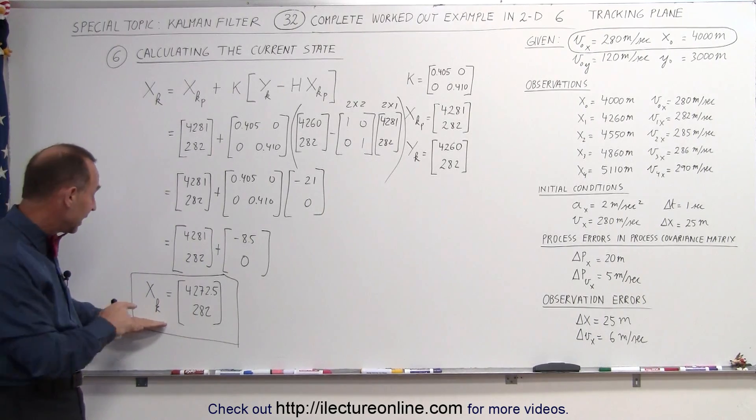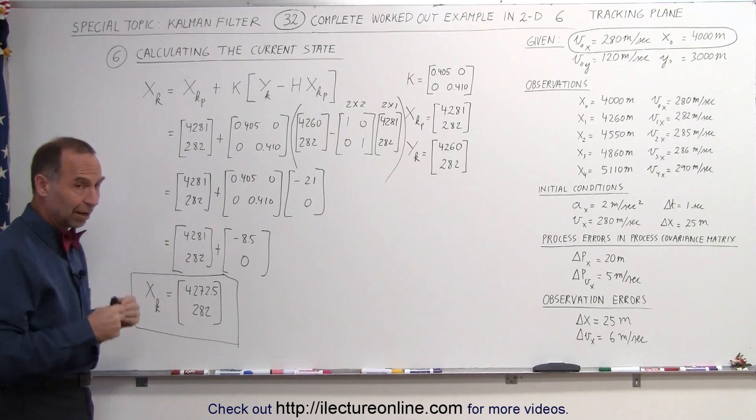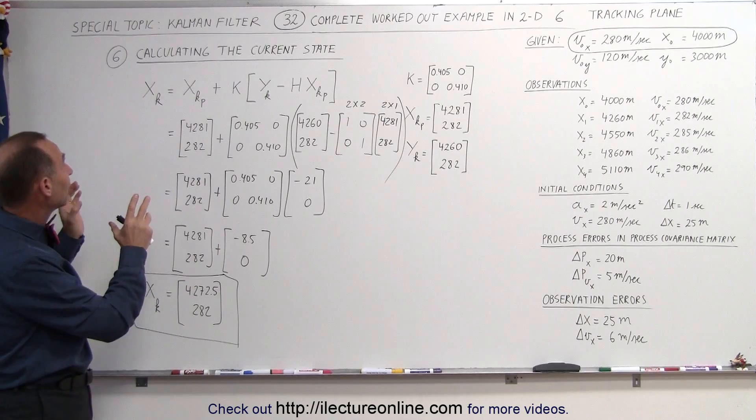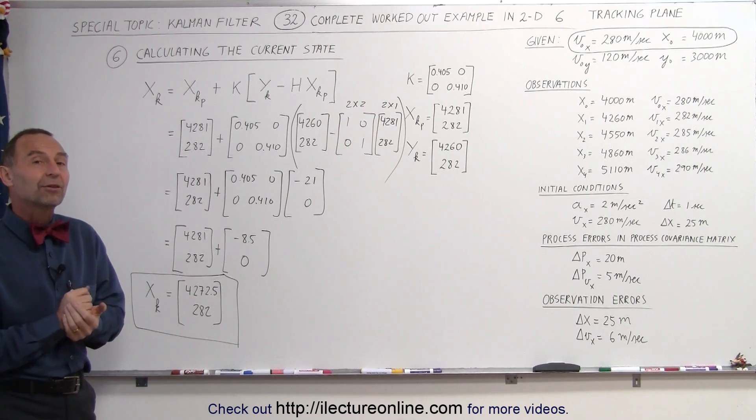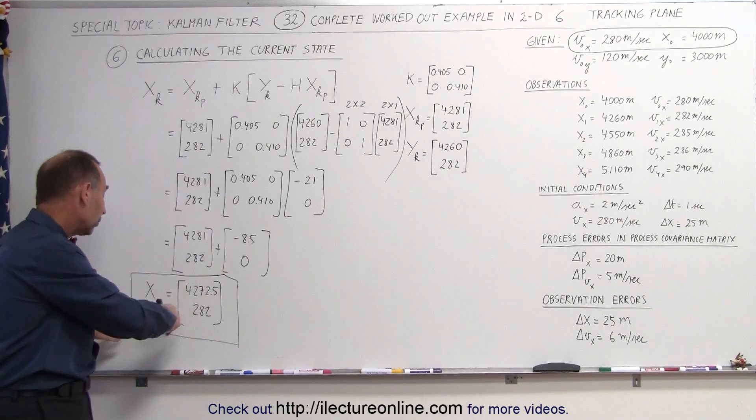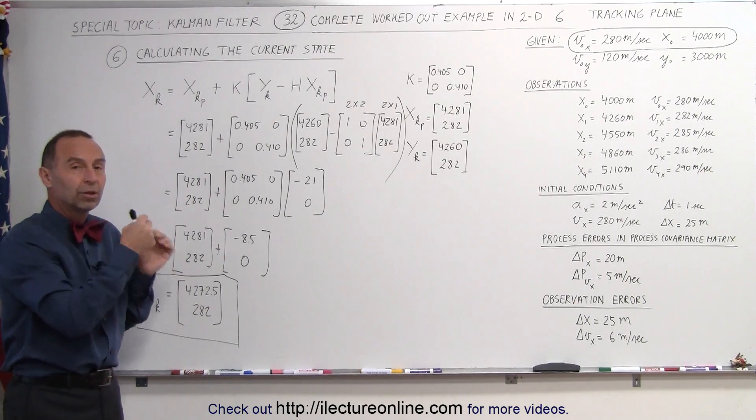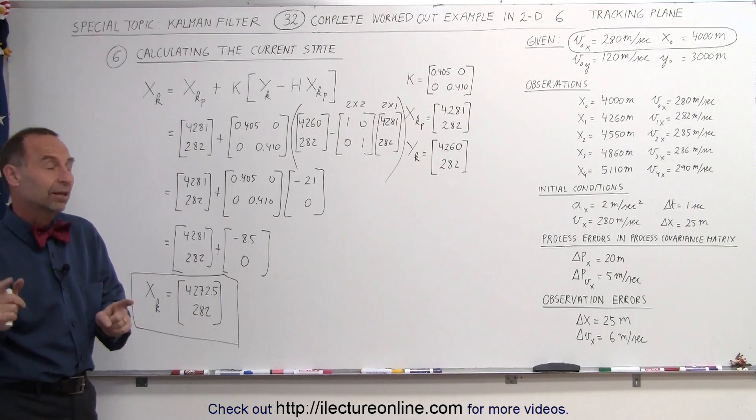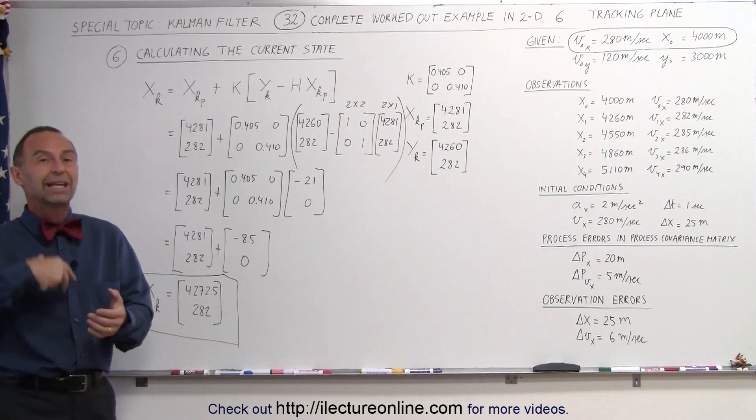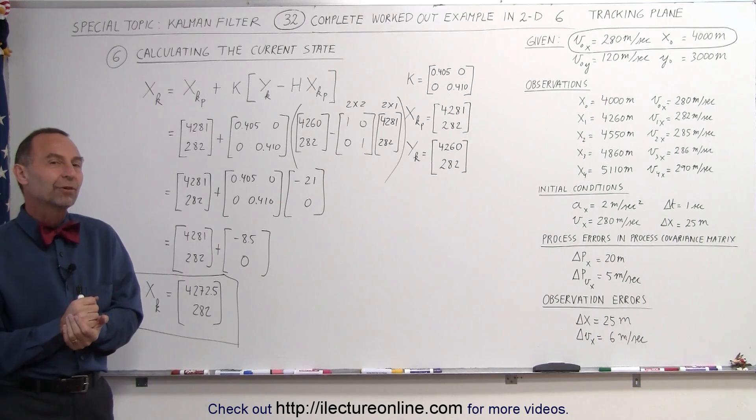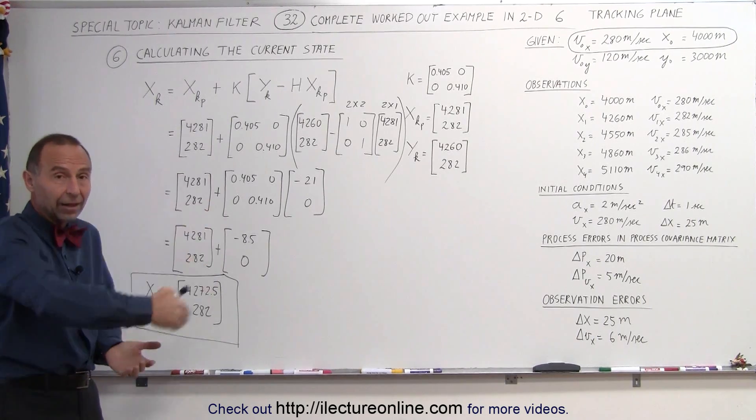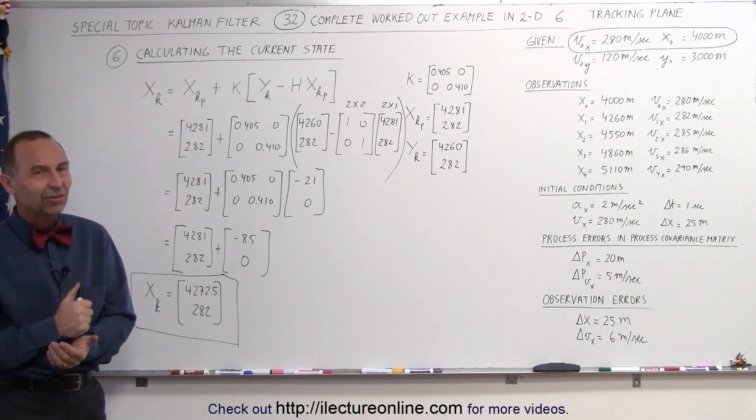Now we have the updated position, x sub k. Now, of course, we need to start getting ready for the next iteration, and so then you'll see what we do in step 7 to adjust for the new process covariance matrix, and then I'll update the new initial conditions for the next iteration. Take a look at our next video. You'll see how we then get ready for the next process, the next iteration of the Kalman filter, and then the whole process starts over again.